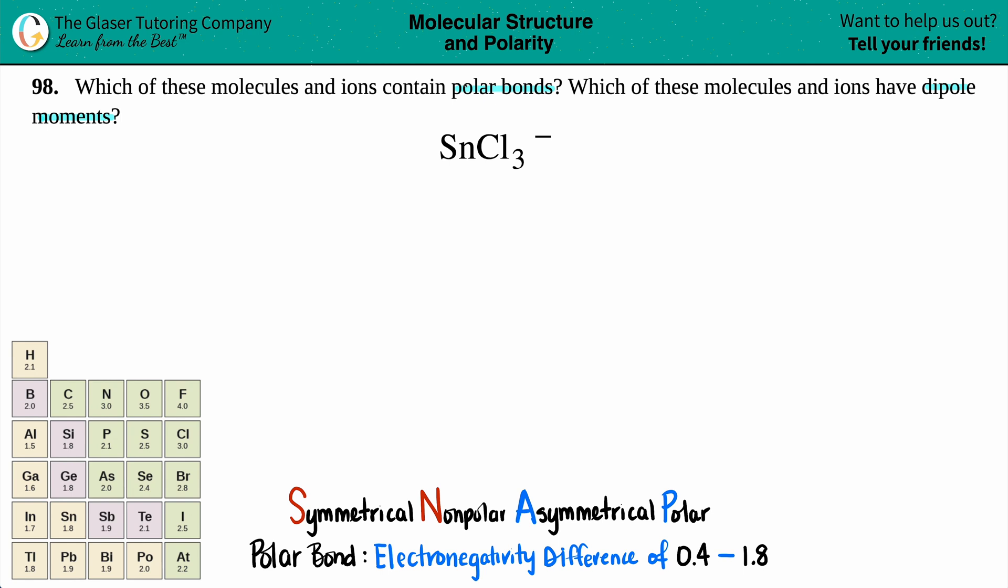Now, there's tons of videos on this channel just designated to drawing Lewis structures. So you could always check back if you need more guidance with those. This one will kind of be like a quick conversion. So you could pause the video if you want to and see if your Lewis structure matches mine. So in this case, I have a tin, an Sn, surrounded by the three chlorines. It doesn't matter where the three of them are, just as long as they're around the chlorine.